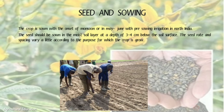Seeds and Sowing: The crop is sown with the onset of monsoon, or in May–June with pre-sowing irrigation in North India. The seeds should be sown in moist soil at a depth of 3–4 cm below the soil surface. The seed rate and spacing vary according to the purpose for which the crop is grown.